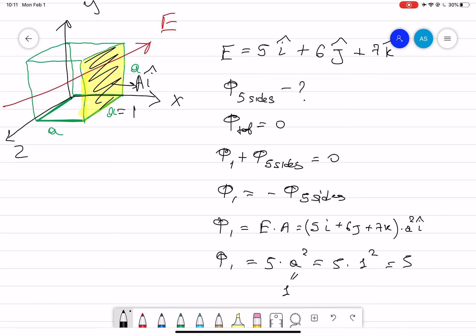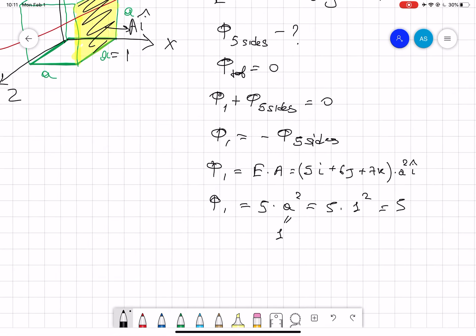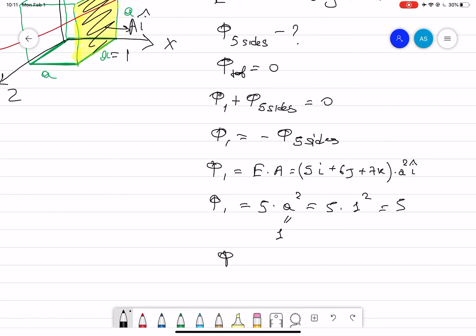Now the flux on the other five non-shaded areas will be equal to negative five. This is how you solve such a problem.